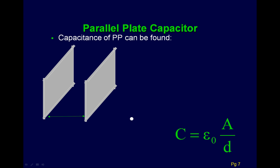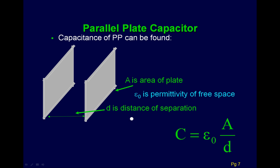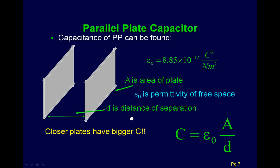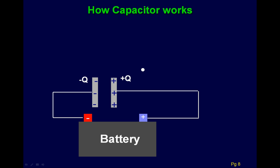Our most basic capacitor is the parallel plate capacitor — literally two pieces of metal next to each other. Two pieces of geometry determine the capacitance: the area of the plate (A) and the distance of the separation (d). Closer plates have a bigger capacitance, and larger area also gives a bigger capacitance. The equation includes ε₀, the permittivity of free space. Increasing the area gives more room for charge; moving the plates closer makes the charges pull each other more strongly, also increasing stored charge.